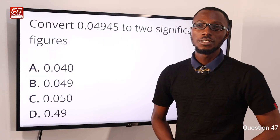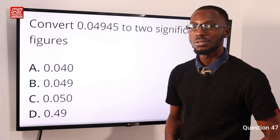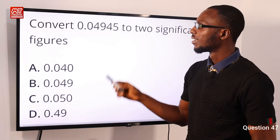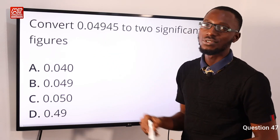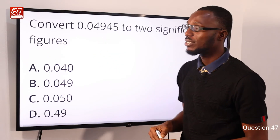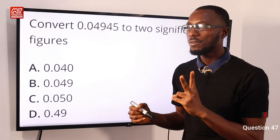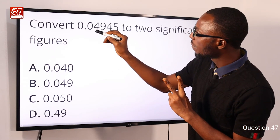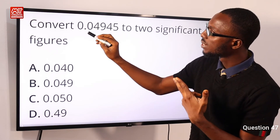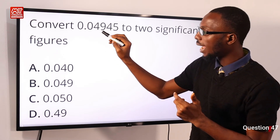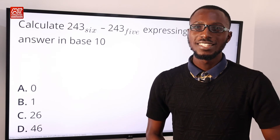Question 47: Convert 0.04945 to two significant figures. Note that leading zeros are not significant figures. The first two significant figures are 4 and 9. So the answer is 0.049, making option B correct.